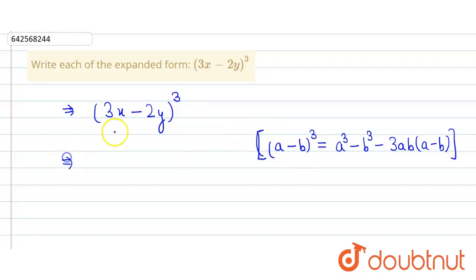Here, 3x is a and 2y is b. So we get (3x)³ - (2y)³ - 3 × a × b. This part is a, this part is b.